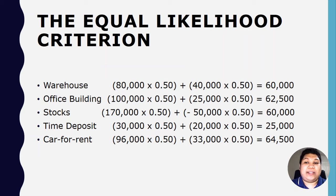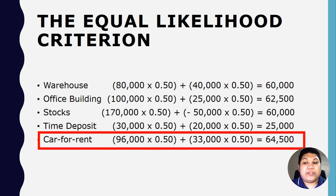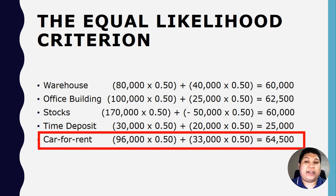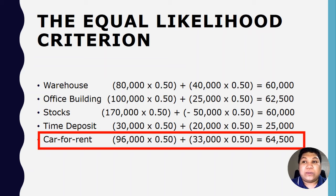Under the equal likelihood criterion, the decision maker should invest in a car for rent, which gives the highest average payoff of 64,500 pesos. The key difference from the Hurwicz criterion is that the Laplace criterion gives equal probability to each state of nature, whereas the Hurwicz coefficient of optimism is based solely on the personal bias or judgment of the decision maker, which is somewhat subjective.